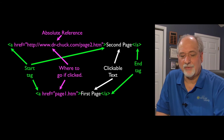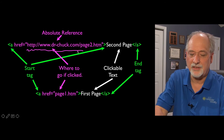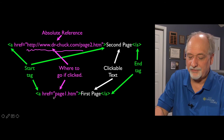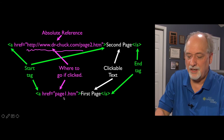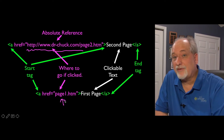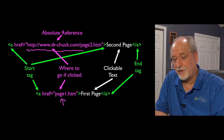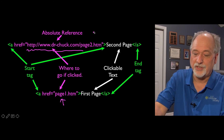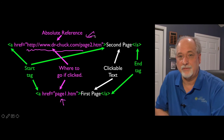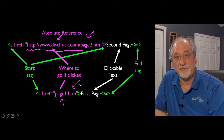Absolute references start with HTTP or HTTPS, while relative references don't. That basically means the page1.htm file has to be in the same folder as whatever file we're viewing right now, on the same server. So if you want to switch folders or switch servers, you have to use absolute references. If you're just moving between files on the same server, you can use relative references.